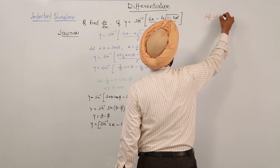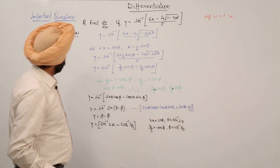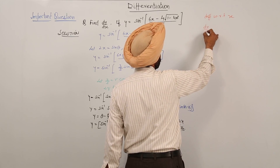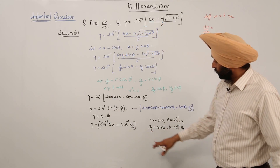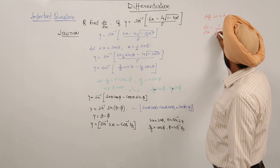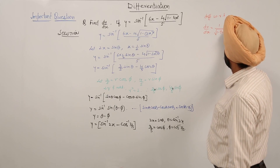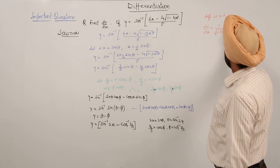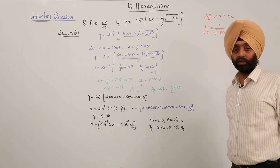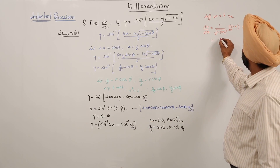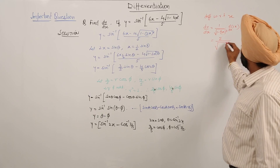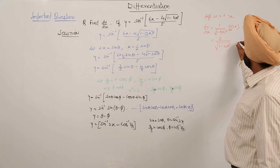Now differentiating with respect to x, dy/dx equals the derivative of sin inverse (2x) minus 0 (the constant term). Differentiating sin inverse (2x) gives 1 over the square root of (1 minus (2x)²) times 2, which is 2 over the square root of (1 minus 4x²). This is the answer.